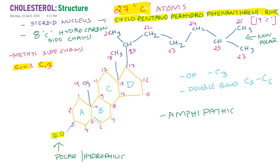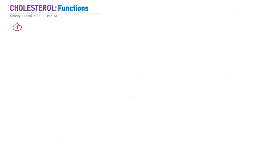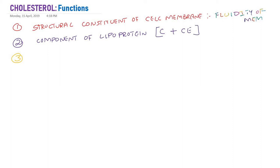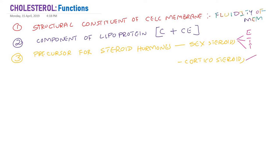Now let us look at the functions of cholesterol. It is an important major constituent of cell membranes — in the lipid bilayer, cholesterol is always present and helps in membrane fluidity. Cholesterol is also an important component of lipoproteins, as both free cholesterol and cholesterol ester. Cholesterol is a precursor for many biologically important compounds: steroid hormones such as sex steroids and corticosteroids, including estrogen, testosterone, progesterone, glucocorticoids, and mineralocorticoids — all derived from cholesterol.